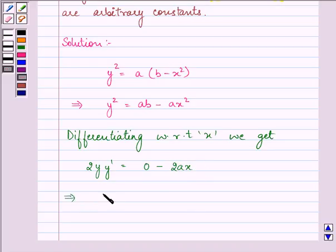That implies 2yy' = -2ax. Simplifying it further, we have the value of a as -yy'/x.